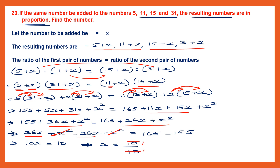So 10x equals 10, meaning x equals 10 divided by 10, which simplifies to 1. We have found the value of x — x is equal to 1. So the number to be added is 1.